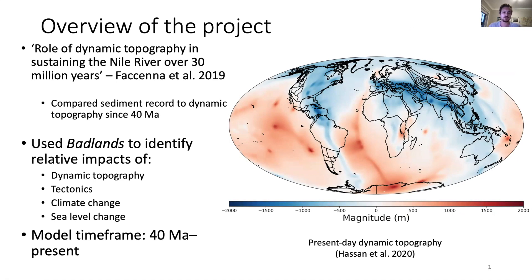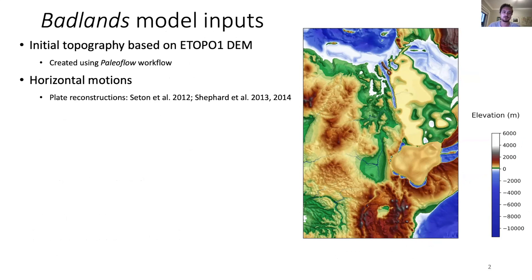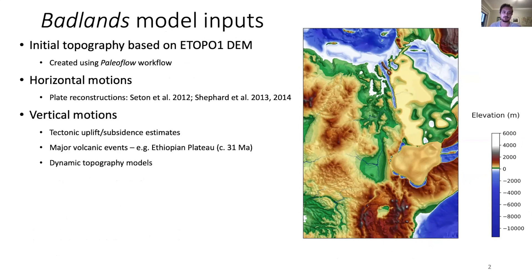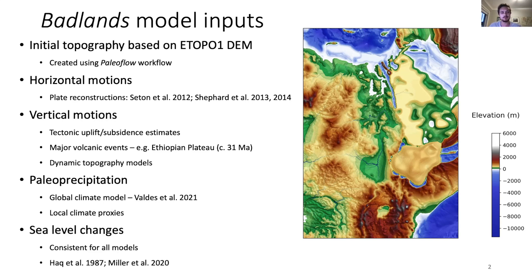As with that paper, we also used a time frame of the last 40 million years for our models. The model inputs included an initial topography surface generated using the paleoflow workflow, as well as horizontal motions derived from plate reconstructions, vertical motions from tectonic uplift and subsidence estimates, different dynamic topography models, and major volcanic events such as the eruption of the several-kilometer-thick flood basalts of the Ethiopian plateau. We applied a paleo precipitation history derived mainly from a global paleoclimate model, modified according to local paleoclimate proxies, and a consistent sea level curve to all models.